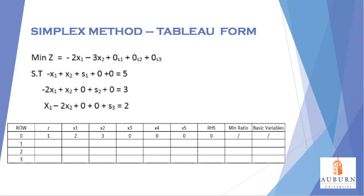Let's fill in row 0, which correlates to the objective function. As you can see in the objective function, all the decision variables are on the right-hand side of the equation. They need to be subtracted to the left-hand side so that only number values are present on the right-hand side. Now that all the decision variables are on the left-hand side, let's fill in the cost coefficients in row 0. Note that Z has a coefficient of 1.